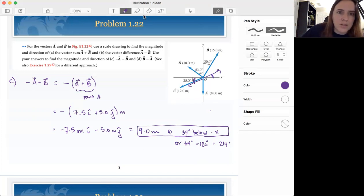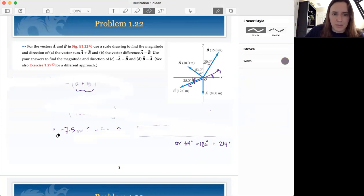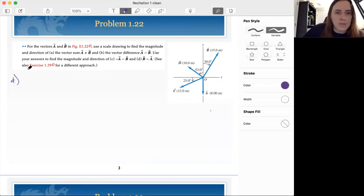So then for part D, it's going to be very similar. Let's erase these guys. So for part D, we're looking at B minus A.